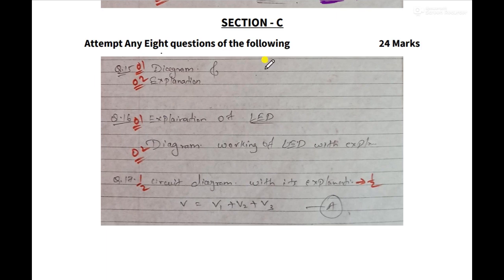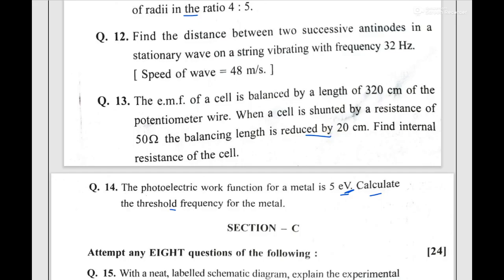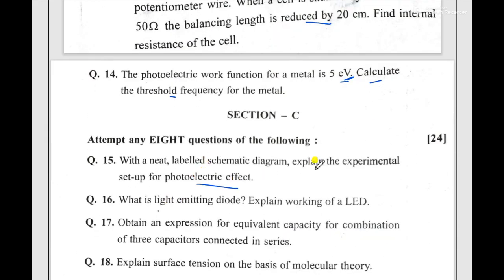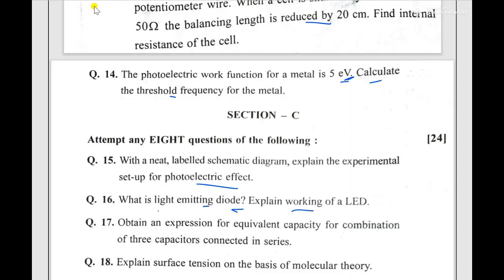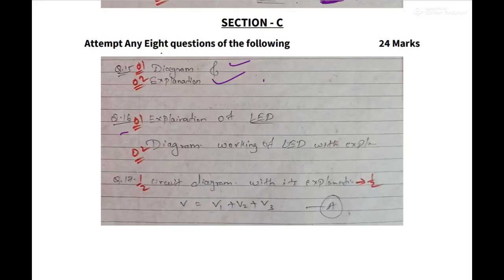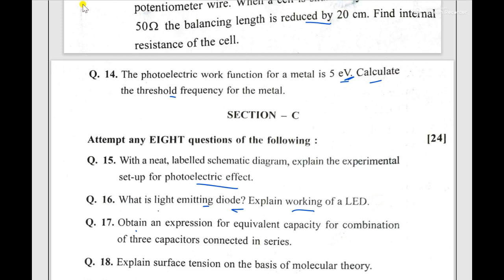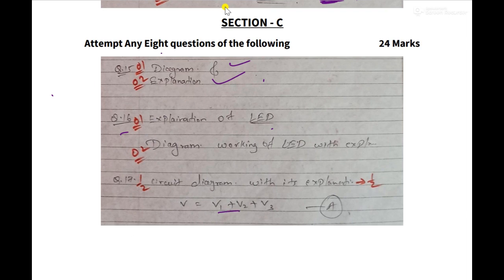Now Section C begins. There are eight questions and you have to attempt any eight — each carries three marks, totalling 24 marks. Question 15 is on the photoelectric effect: draw the experimental arrangement setup diagram, explain why when light of suitable frequency falls on a photosensitive metal, electrons are detached from the cathode, and to measure the current you have to record it — write accordingly.